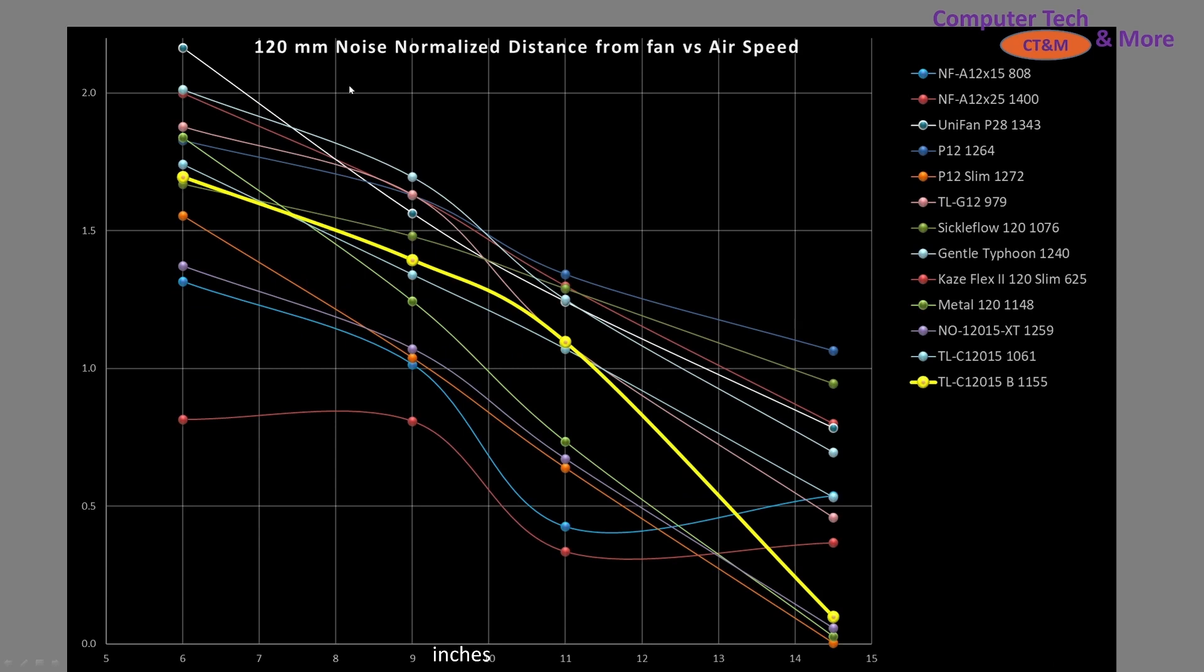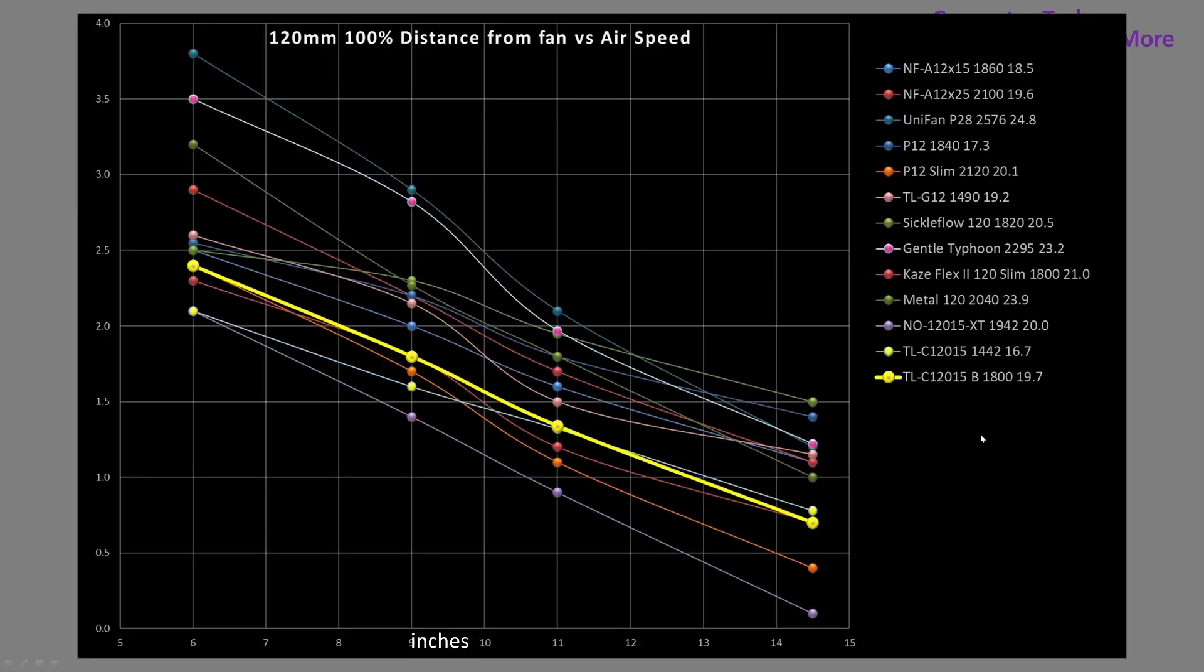Compared to other fans that I've tested, noise-normalized results. Other than at very big cases, it actually does fairly well. It's kind of in the middle of the pack, which is a very good result for the fan altogether. If we crank things up to 100% PWM fan signaling, spinning at 1,800 RPM, it's bottom middle of the pack. It makes a lot of sense. It does actually fairly okay, but I wouldn't really recommend it for very big cases.